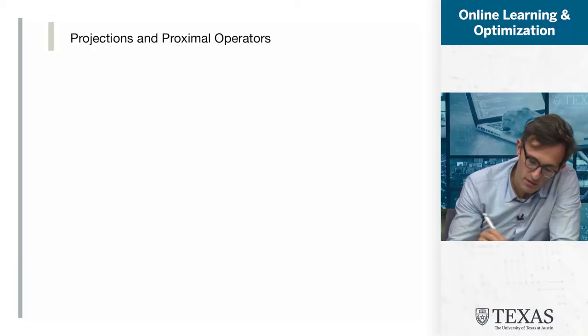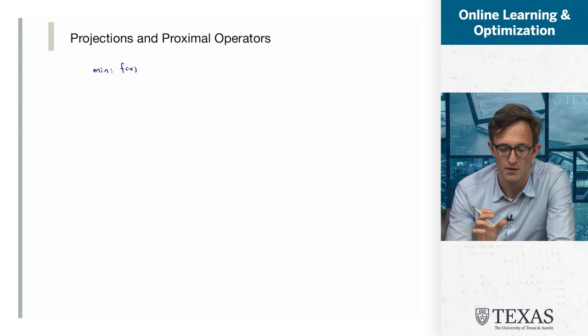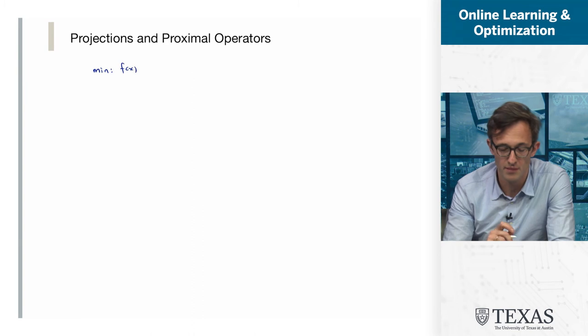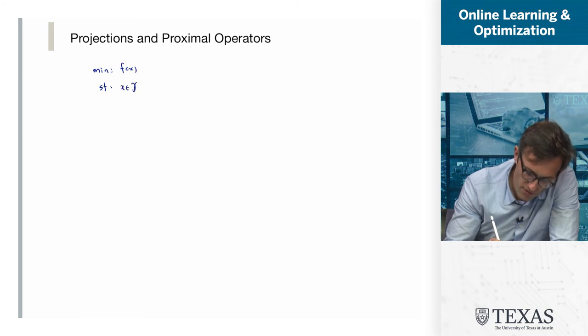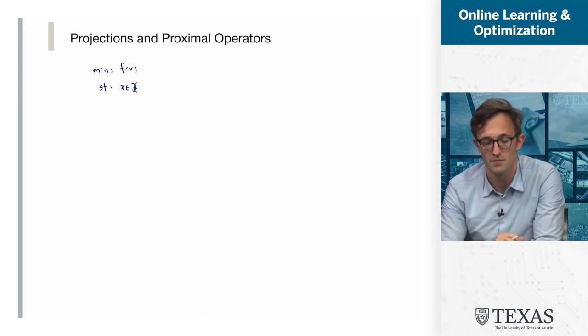Welcome back. We're now talking about projections and what's called a proximal operator. We're also going to move a little bit outside of the black box model, the oracle model, which we've essentially been talking about so far. For our problem — minimize f of x — every algorithm we've seen so far: gradient descent, the subgradient method, accelerated gradient descent, all use only evaluations of the function and evaluations of the gradient. But when we started talking about convex optimization, there was another important component. We spent almost equal time talking about convex functions as convex sets, and we have yet to see the appearance of convex sets.